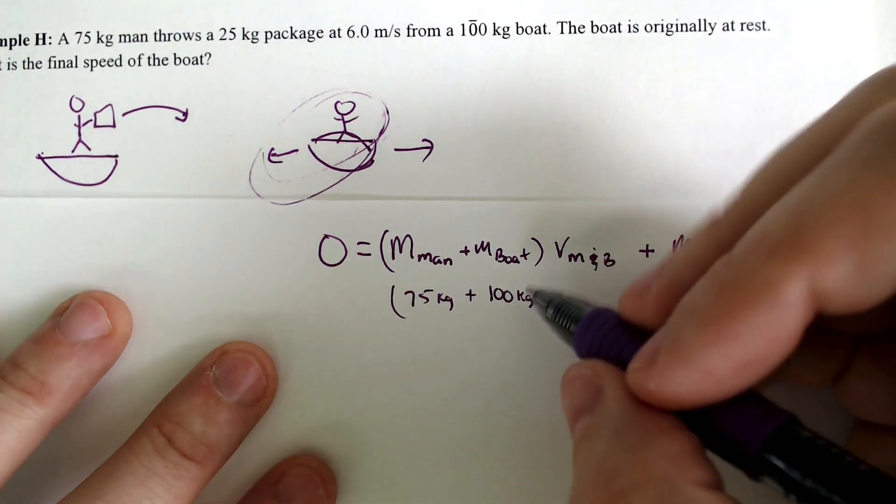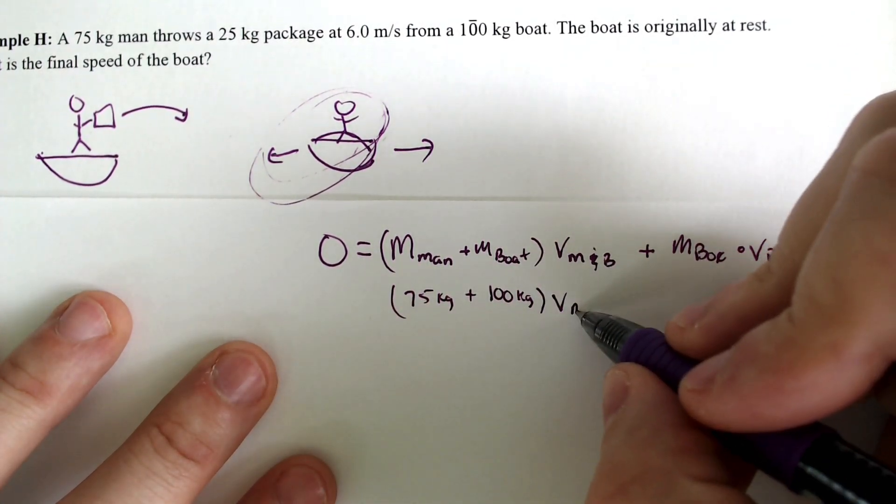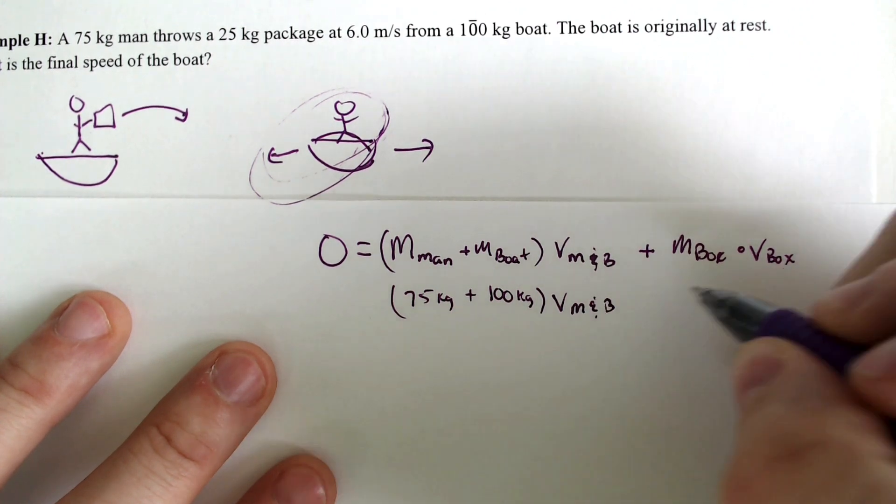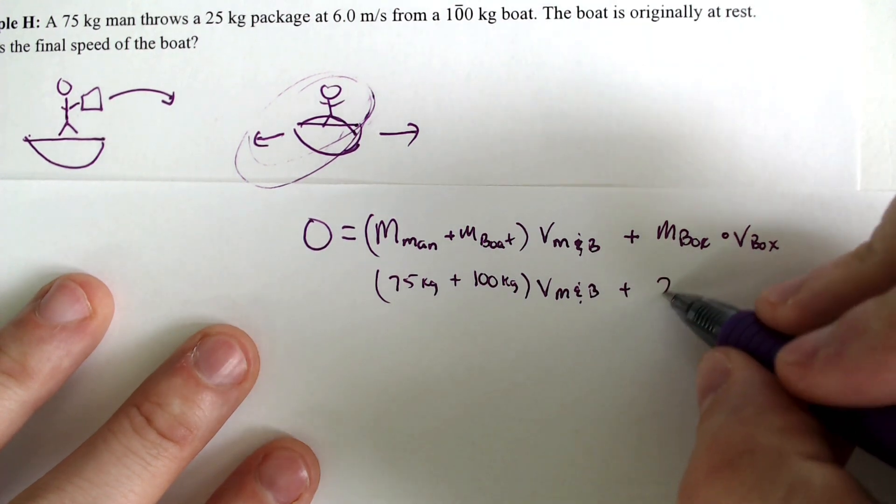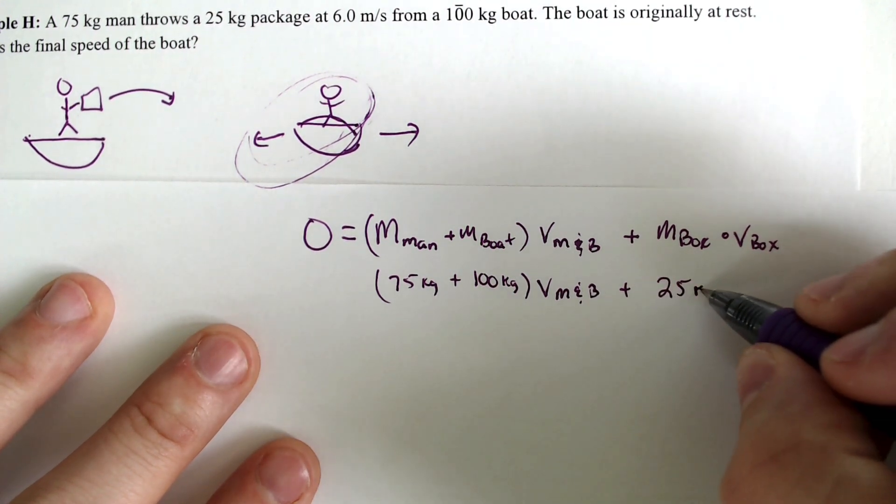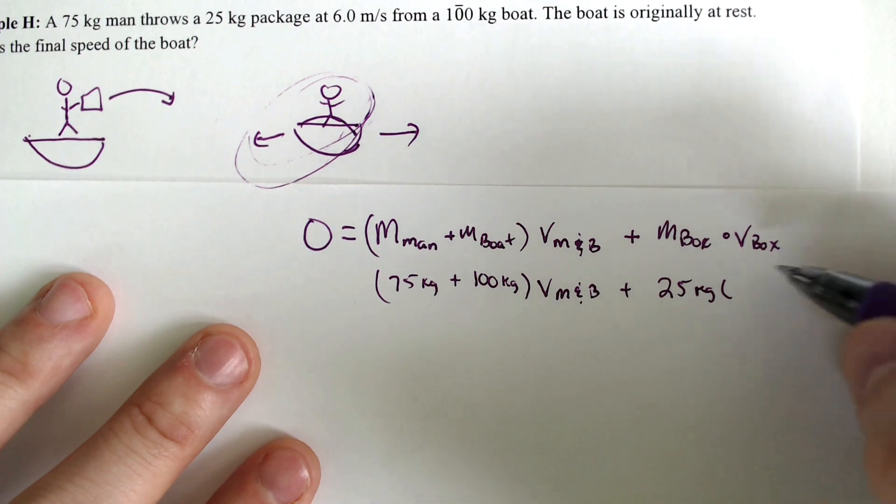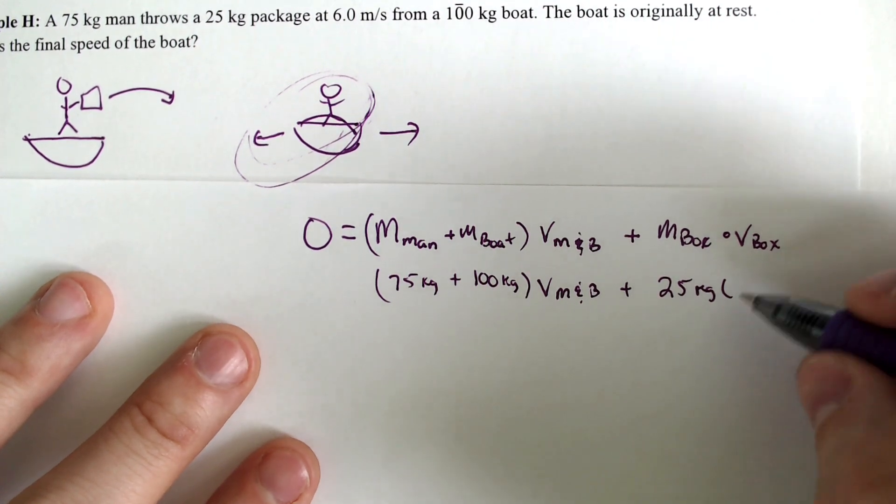The velocity of the mass of the boat, we don't know yet. That is what we are looking for. Plus the mass of the box. The mass of the box is 25 kilograms. And the velocity of the box was 6 meters per second.